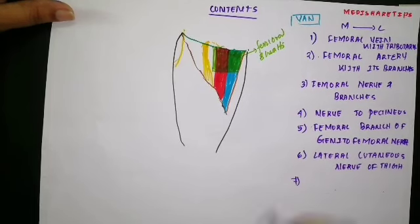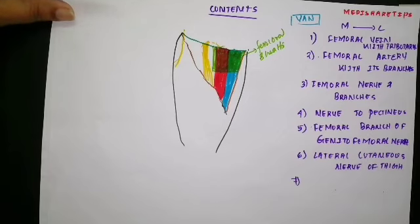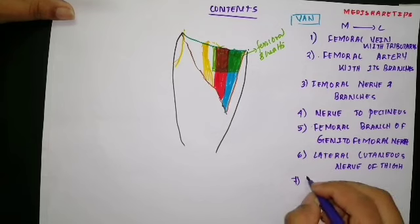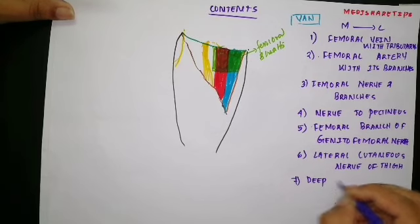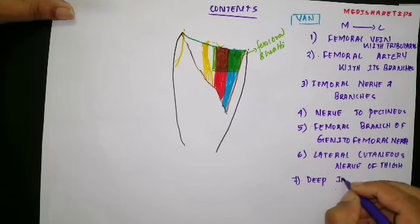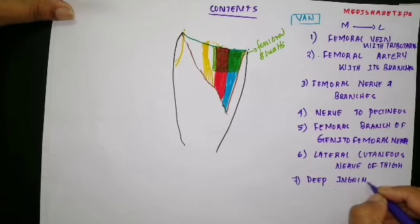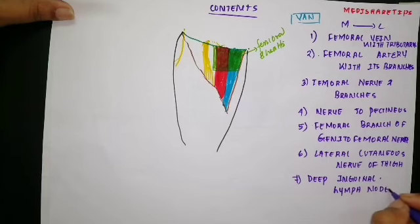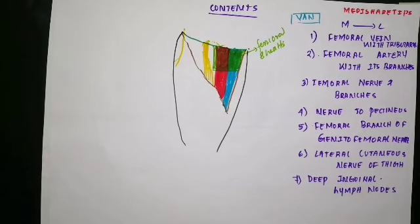So the additional nerves as contents are: nerve to pectineus, femoral branch of genitofemoral nerve, and lateral cutaneous nerve of thigh. The deep inguinal lymph nodes are also contents of the femoral triangle.